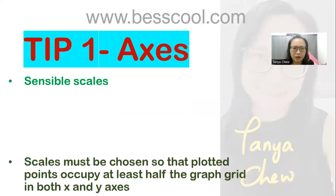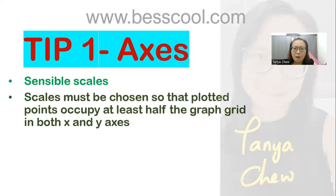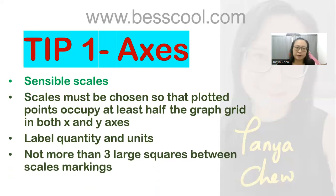But you have to use sensible scales on your axis. The scales that you choose must be plotted. You must make sure that your plotted points occupy at least half of the graph grid in both x and y-axis. After that, make sure that you label the quantity and the units which are appropriate. Also make sure not more than three large squares between scale markings.